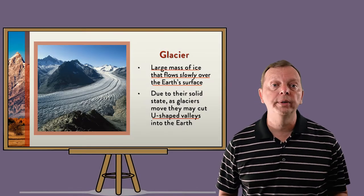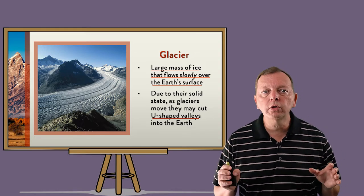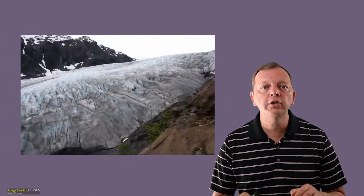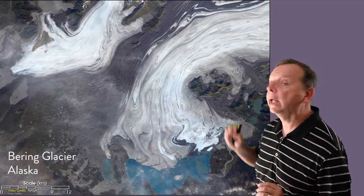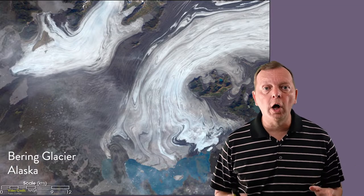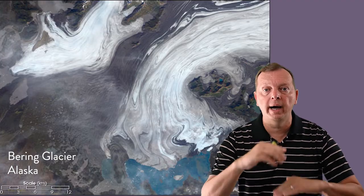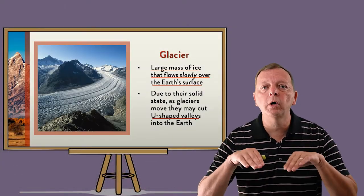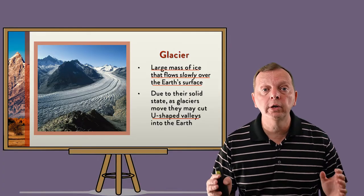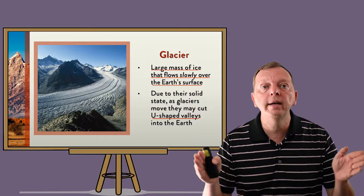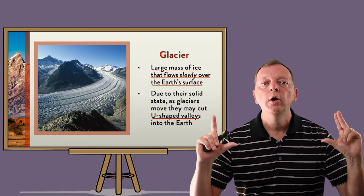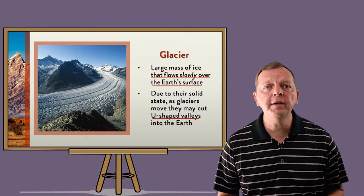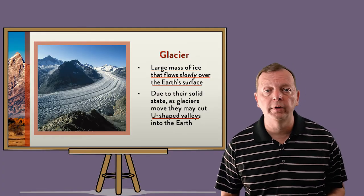While rivers cut either steep canyons or V-shaped valleys, glaciers create U-shaped valleys. A glacier is a huge mass of ice that slowly moves due to gravity — essentially think of it as a river of ice. Take the Bering Glacier in Alaska, which is 121 miles long, 10 miles wide, and one half mile deep. Because glaciers are so massive, as they move they carve valleys into the Earth's surface. But because glaciers are solid and not liquid, they do not narrow as they cut deeper, so instead of V-shaped valleys they create U-shaped valleys with steep rather than sloped sides. Some of these valleys can be quite large and others more narrow depending upon the width of the glacier.